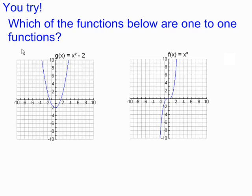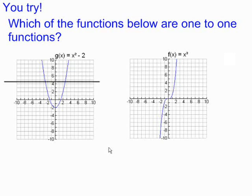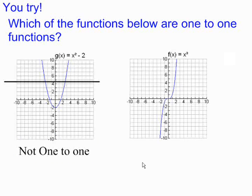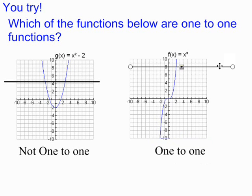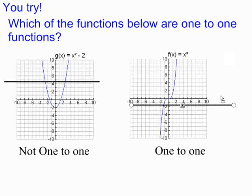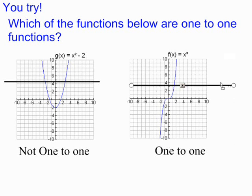Now you try it. Which of these functions below are one-to-one functions? Our first example is not one-to-one — it does not pass the horizontal line test. Our second example to the right is one-to-one because it passes the horizontal line test; a horizontal line anywhere on the graph will only intersect it at one point.